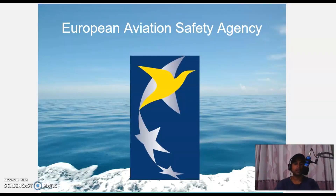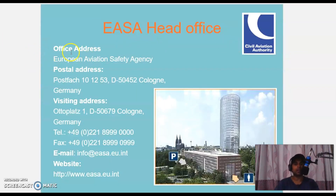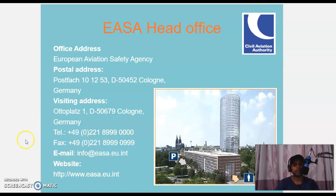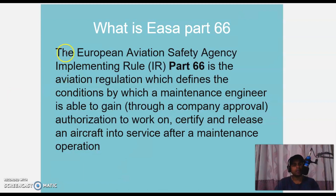Let's move to the introductions. This is a European Aviation Safety Agency logo. We will go into EASA head office and office addresses. The European Aviation Safety Agency postal address belongs to Germany, and they have telephone numbers, fax numbers, email and website.